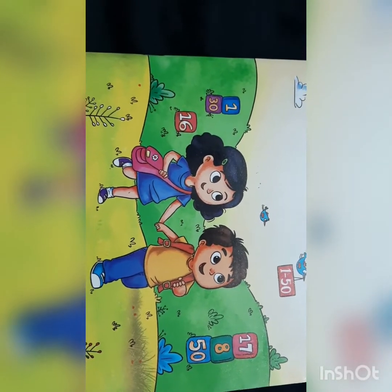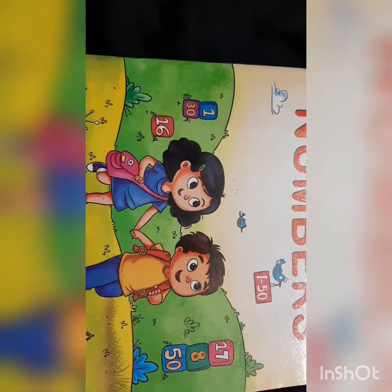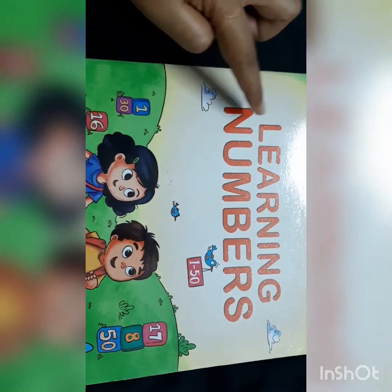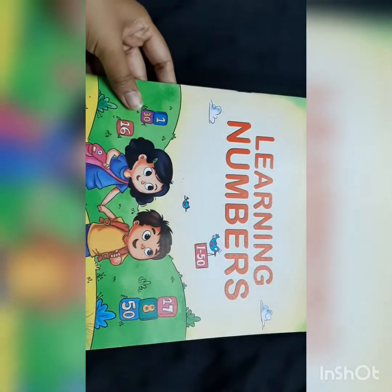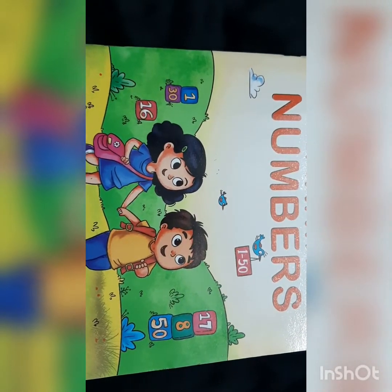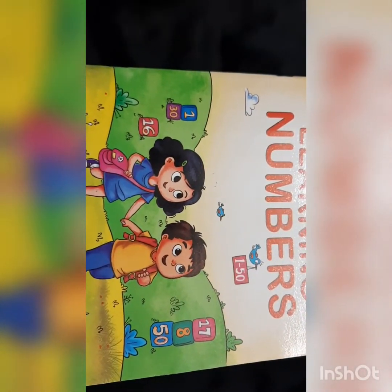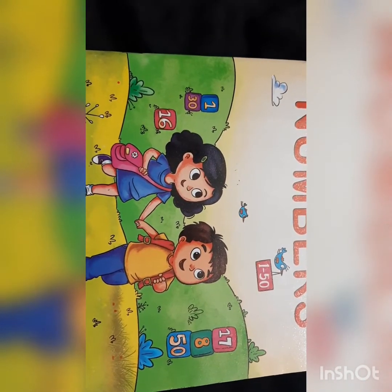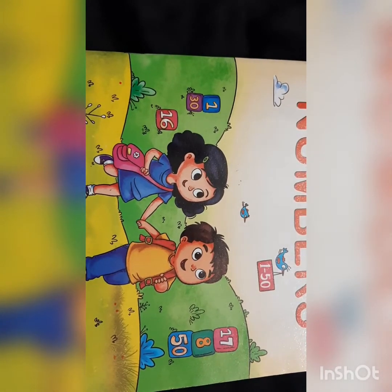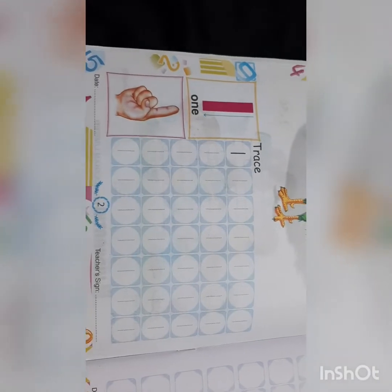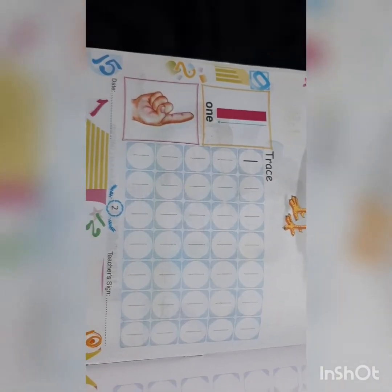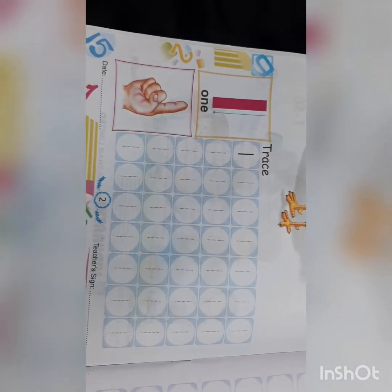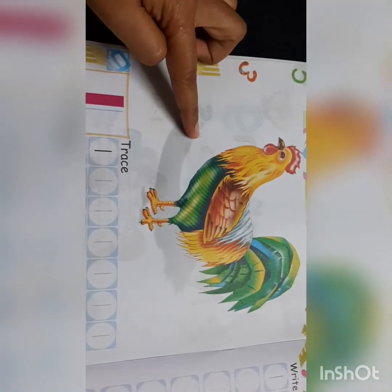So get your book, Learning Numbers. Get ready with this book, along with your pencil, eraser, and crayons. Dear parents, you are requested to sit with your child and guide. Open your book to page 2. You can see a picture is there.